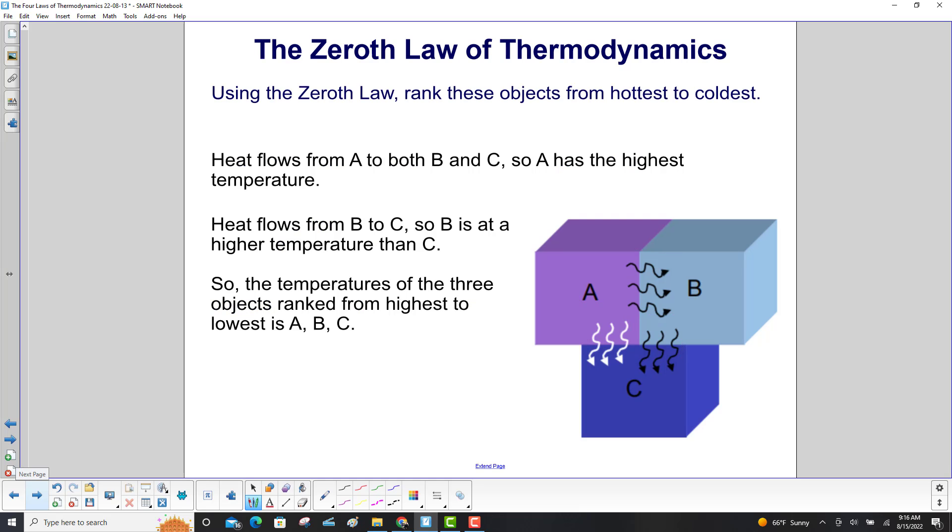Heat flows from A to B, and from A to C, so A has the highest temperature. Heat flows from B to C, so B is at a higher temperature than C. Therefore, the temperature of the three objects, ranked from highest to lowest, is A, B, C.